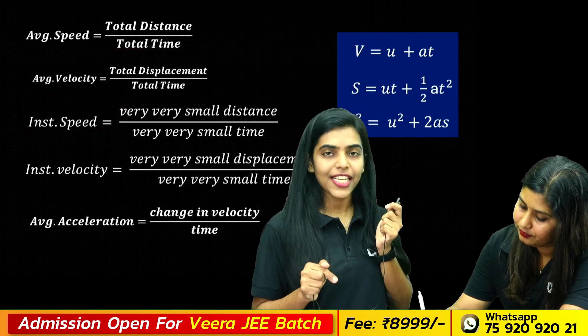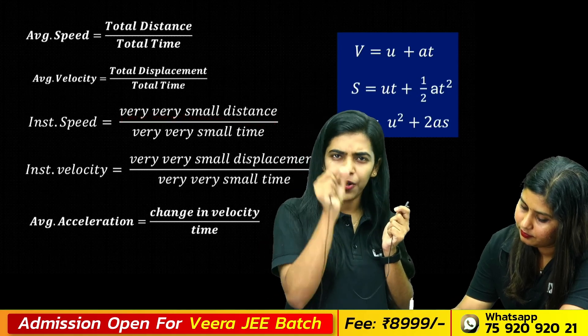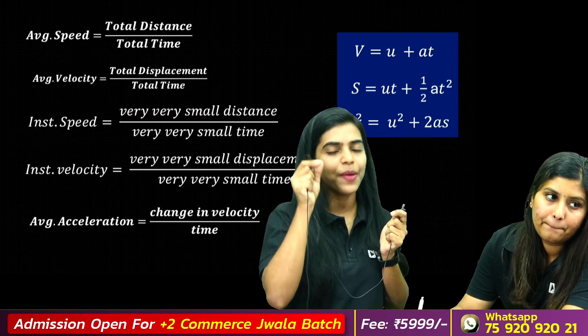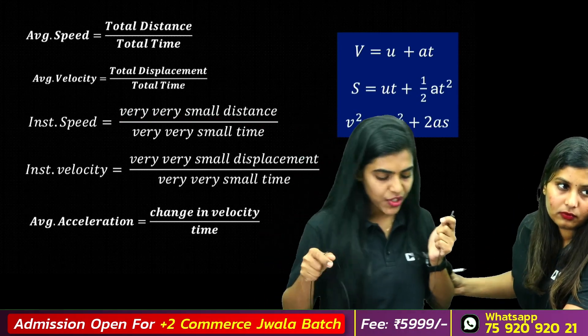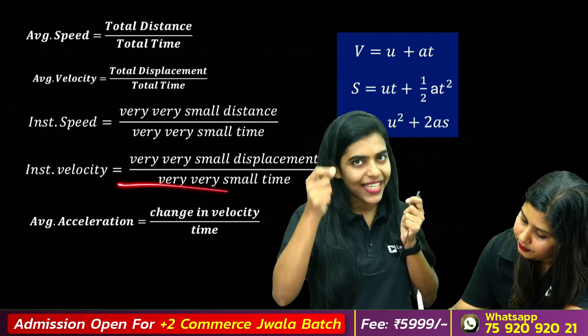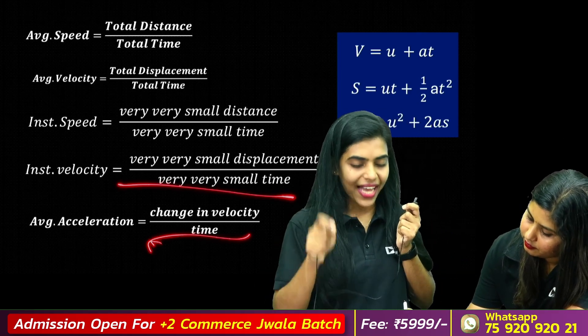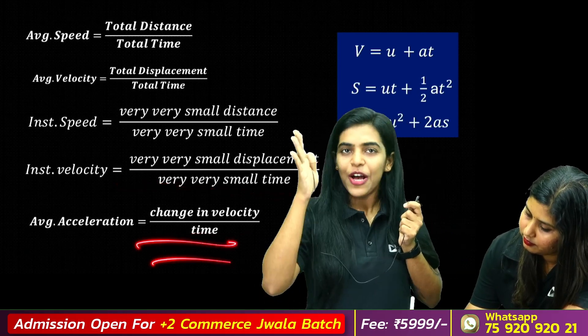Instantaneous speed is the limit of distance over time. Velocity is displacement by time. Acceleration is the change in velocity — final velocity minus initial velocity divided by time.